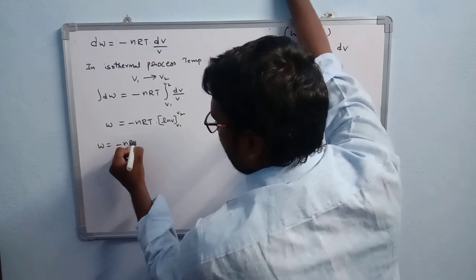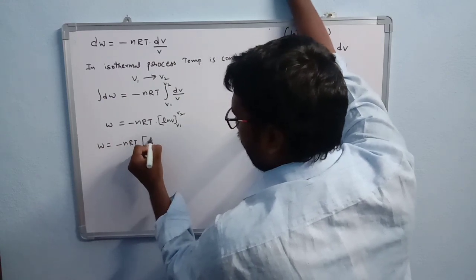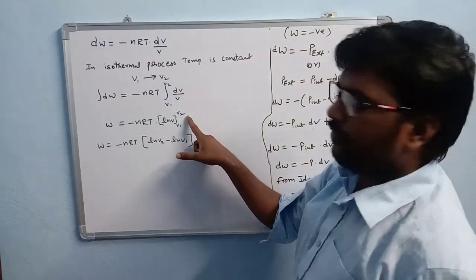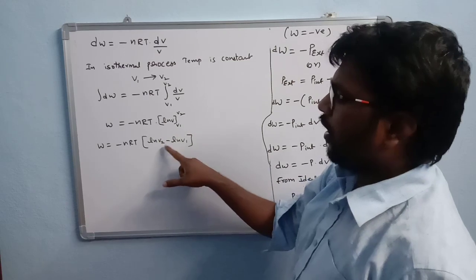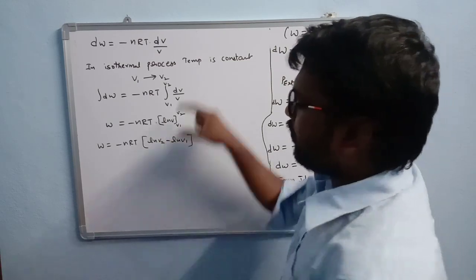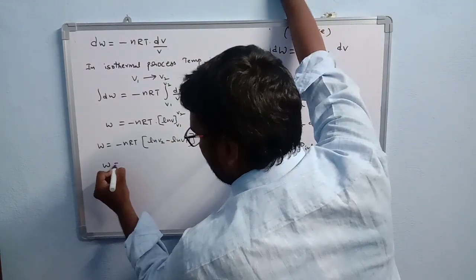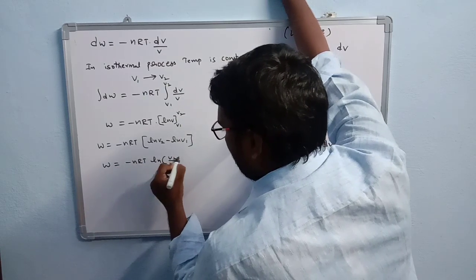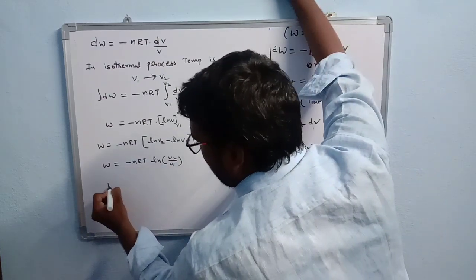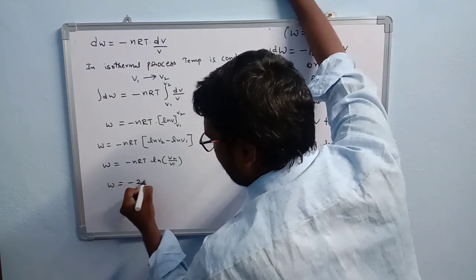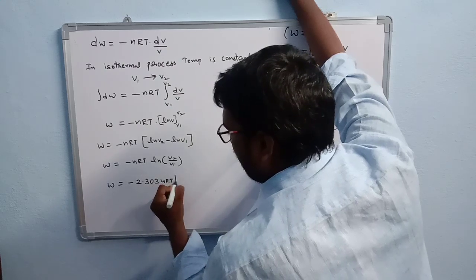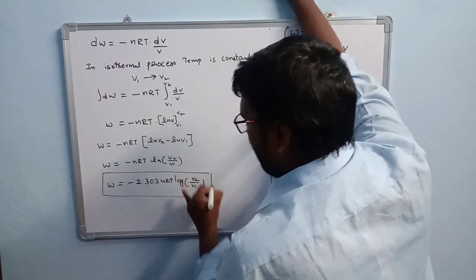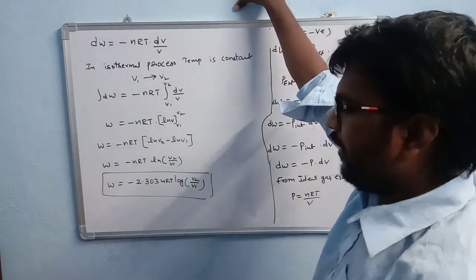Therefore, W = −nRT (ln V2 − ln V1). Using the logarithm property, this becomes W = −nRT × ln(V2/V1). Converting natural log to log base 10: W = −2.303 nRT log(V2/V1). This is the formula for finding work done in the expansion of an ideal gas when volume change is given.